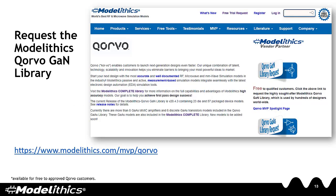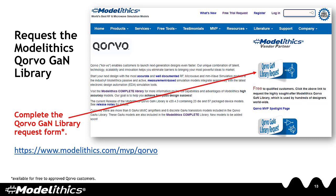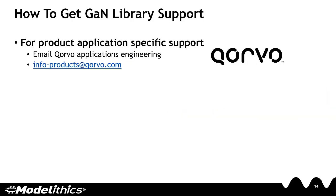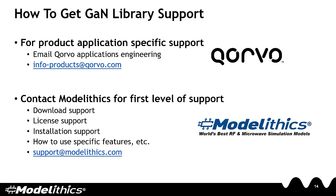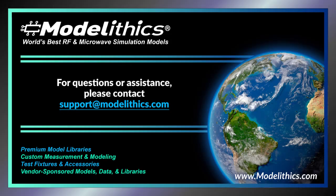To request the ModelLythics Corvo GAN library, please fill out the form on our website. For product application-specific support, you can email Corvo Applications Engineering. For first-level support, you can contact ModelLythics at support@modellythics.com.